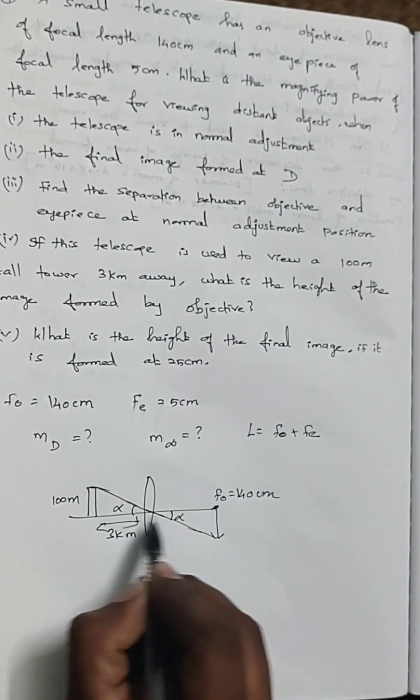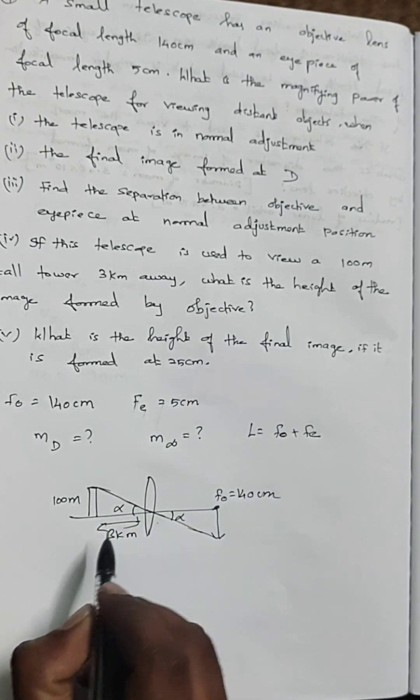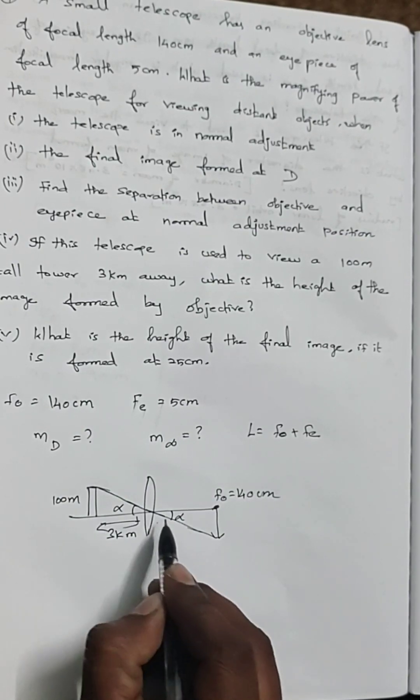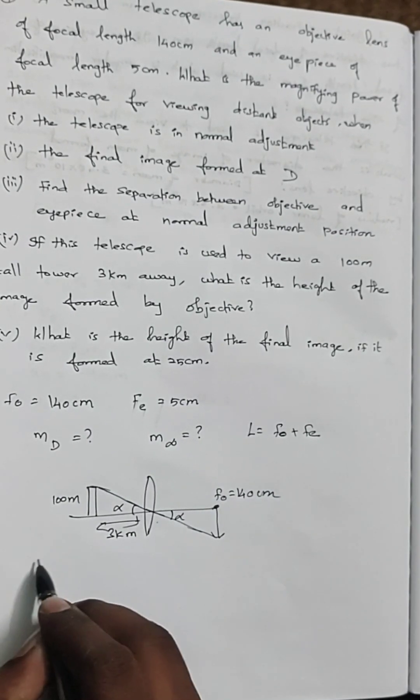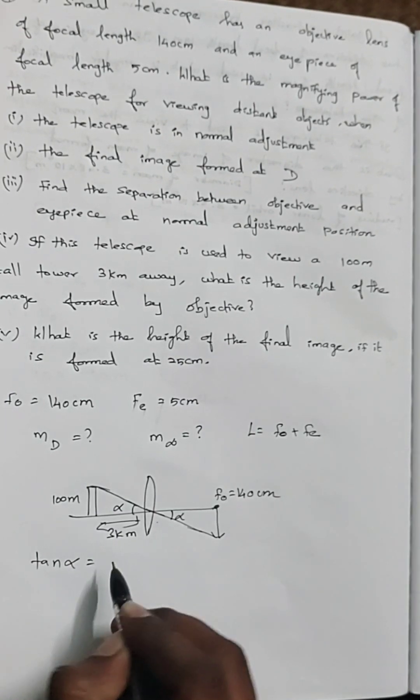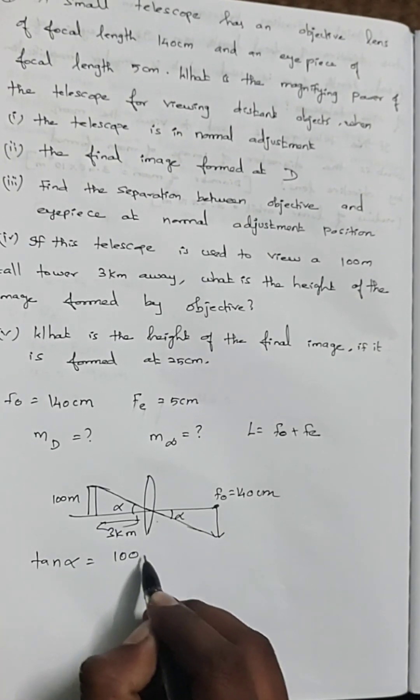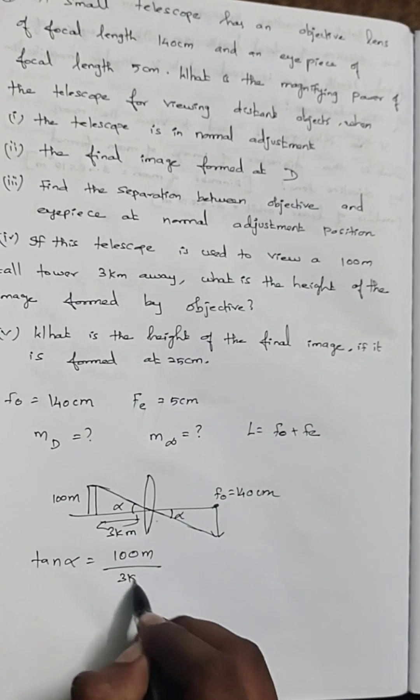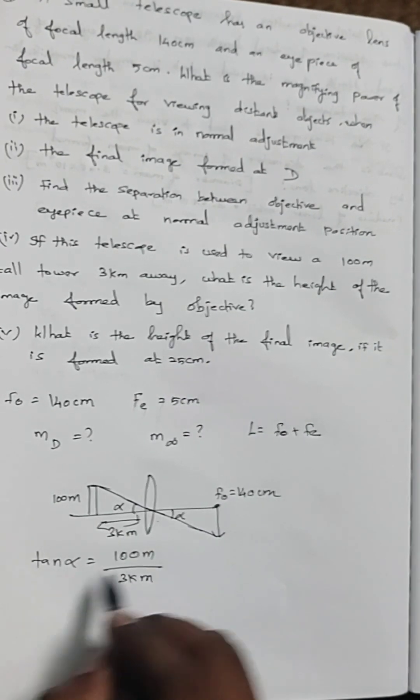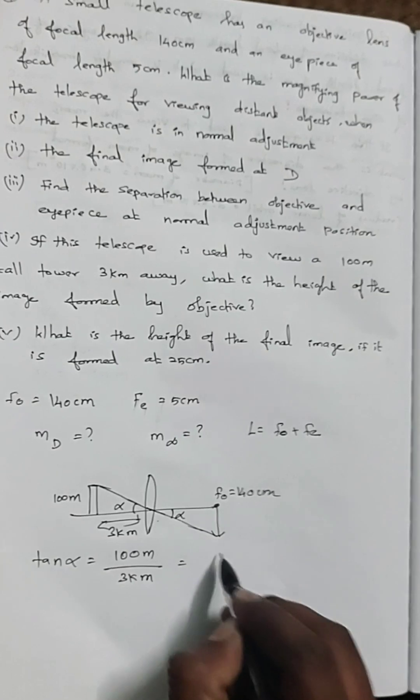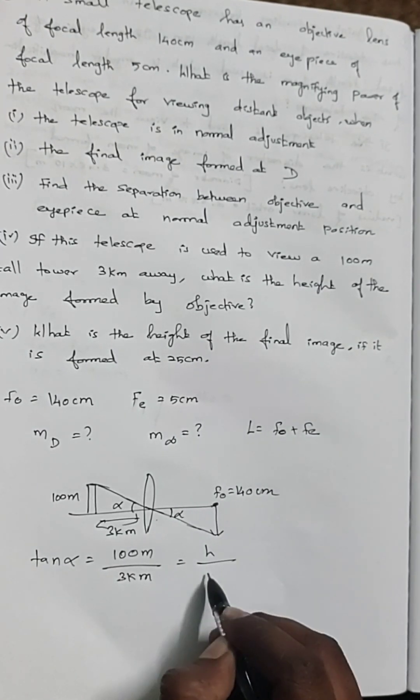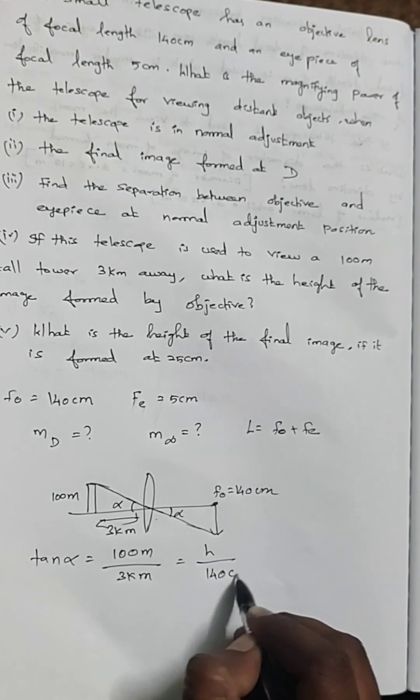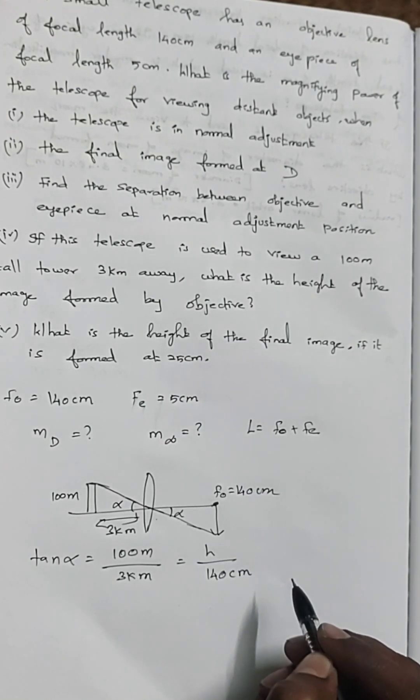By proportionalities we can find the answer. Tan alpha equals opposite side 100 meter divided by 3 kilometer converted to meters. Another side tan alpha equals h divided by 140 centimeters.